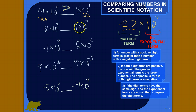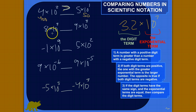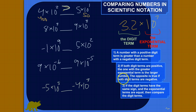Let's look at 8 times 10 to the third versus 9 times 10 to the third. Rule one: both are positive digit terms, so that doesn't apply. Rule two: both digit terms are positive, but they have equal exponential terms — both ten to the third. So we move to rule three: the digit terms have the same sign and the exponential terms are equal, so compare the digit terms. Nine is greater than eight, so 9 times 10 to the third is greater than 8 times 10 to the third.